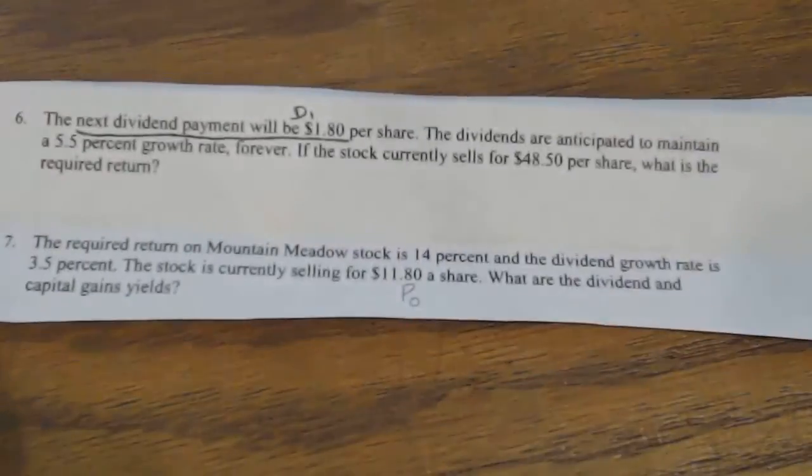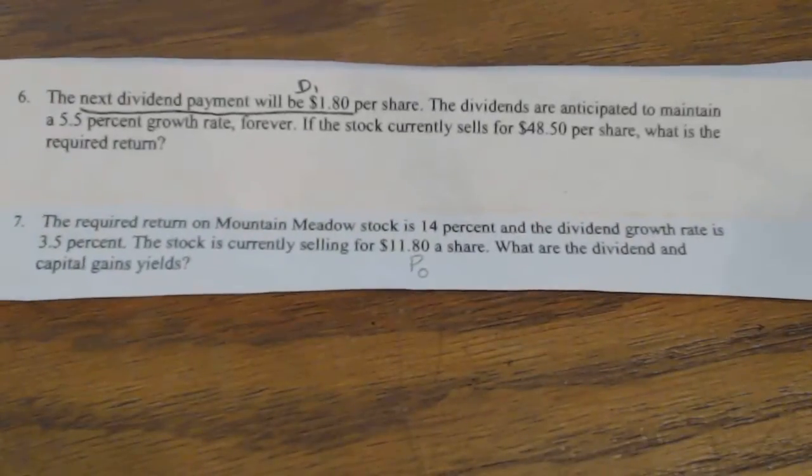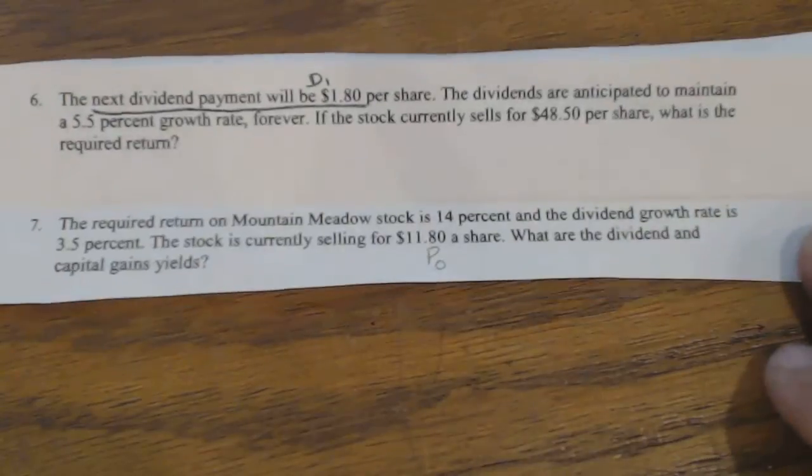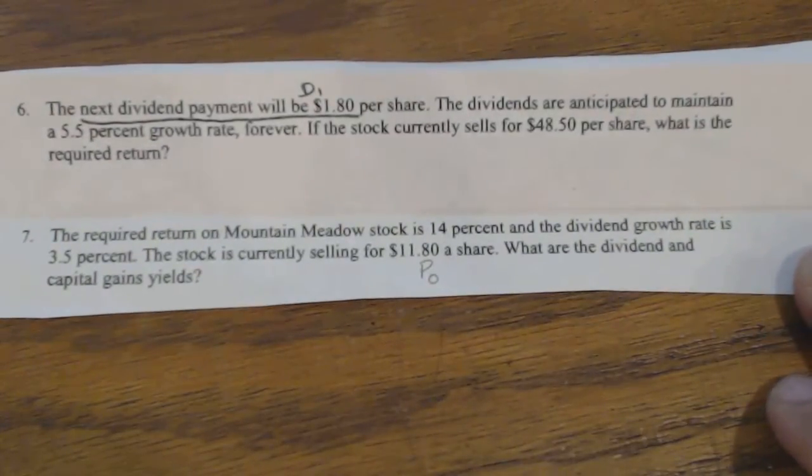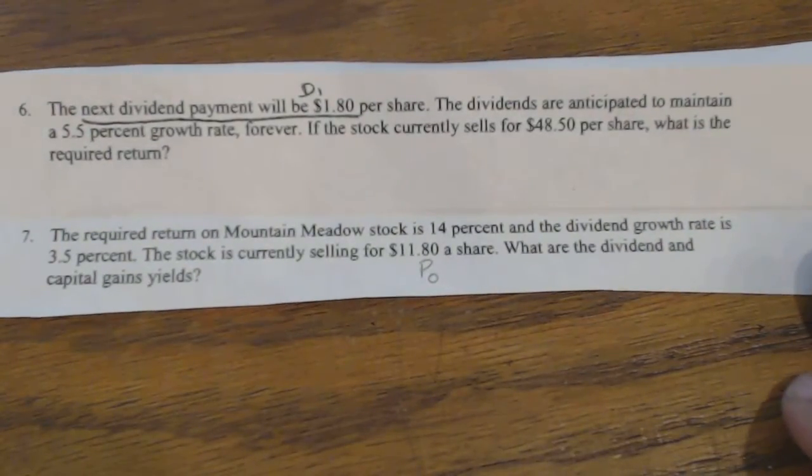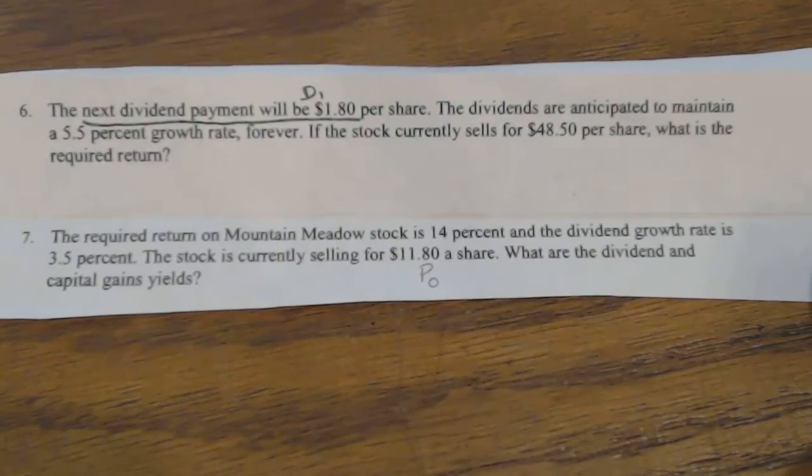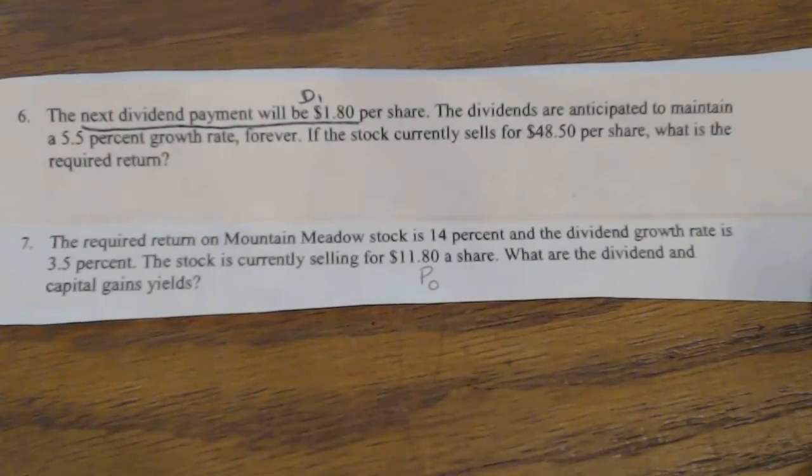Okay, back to the problems. Problem number seven. The required return on Mountain Meadow stock is 14%, so that would be R, and the dividend growth rate is 3.5%, which would be G. The stock is currently selling at $11.80, so that's P0. What are the dividend and capital gains yields?